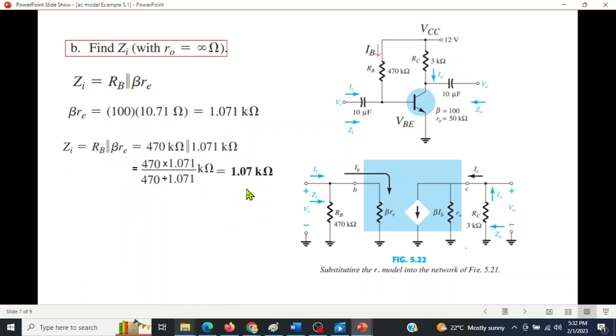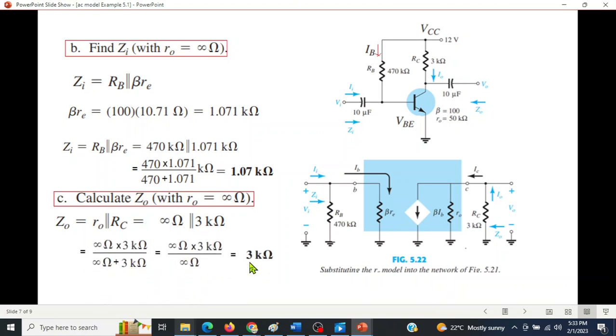Part c: calculate Z_o with r_o = ∞. Now we are calculating this one, so r_o will play its role here. r_o in parallel with R_C will be Z_o, the output impedance. Z_o = r_o || R_C. r_o is infinity and R_C is 3 kΩ, so solving this, the answer is 3 kΩ. The infinity cancels so it will be 3 kΩ.